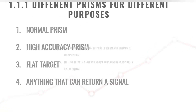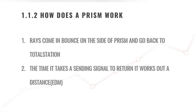How does a prism actually work? The reflective ray sent out from the turtle station bounces on the sides of the mirrors of your prism and then returns to your turtle station — that's also what determines your prism constant. The time it takes for the sending signal to return allows the turtle station to compute the exact distance where your prism is located. This method is also known as EDM, or electronic distance measurement — the ray is sent out, bounces inside the prism, and is sent back.